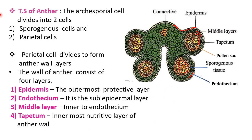A young anther is made up of parenchymatous tissue, which is a type of simple tissue, surrounded by epidermis. The inner side of the epidermis is called hypodermis. Some cells of the hypodermis develop into archesporial cells. The archesporial cells divide into an inner sporogenous cell and outer parietal cells. The sporogenous cells form sporogenous tissue, which later develops into pollen grains, while the parietal cells divide to form the wall of the anther. The wall of the anther is made up of four layers: epidermis, endothecium, middle layer, and tapetum.